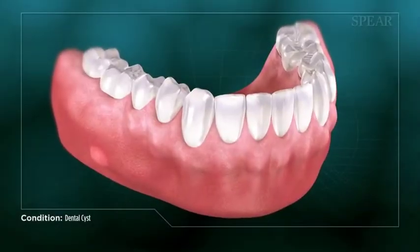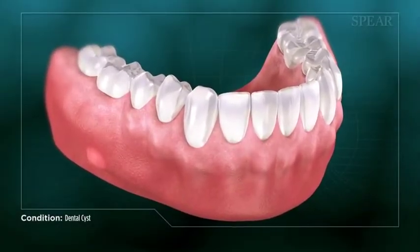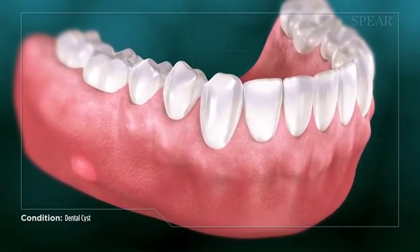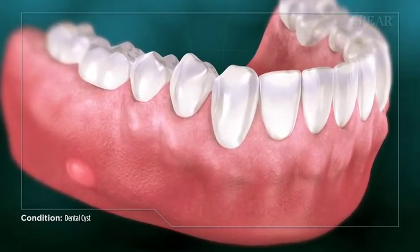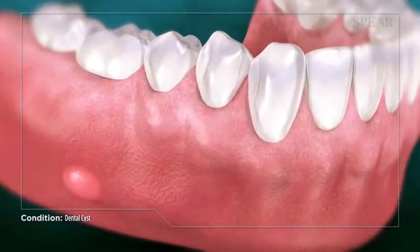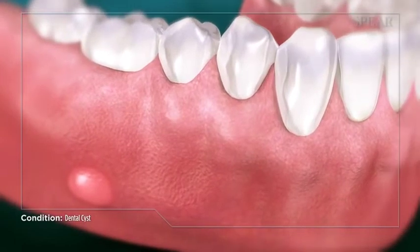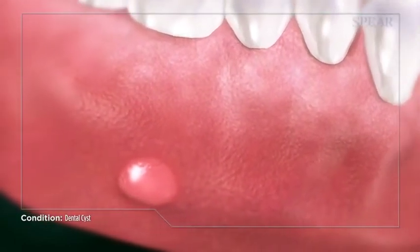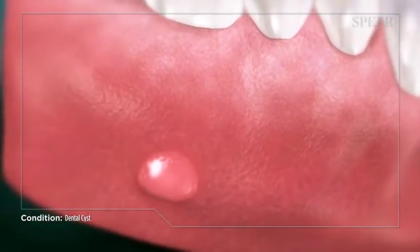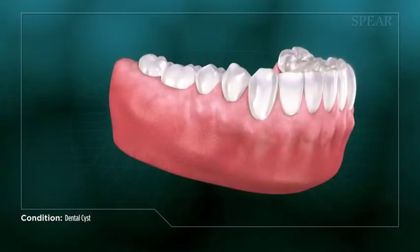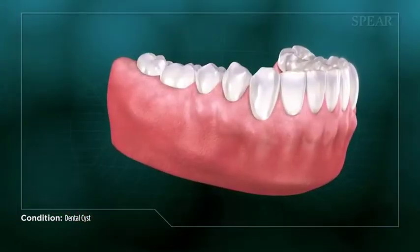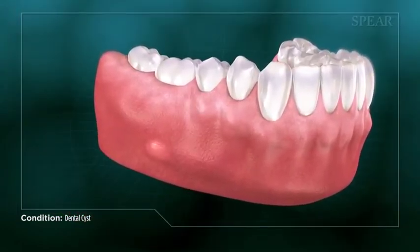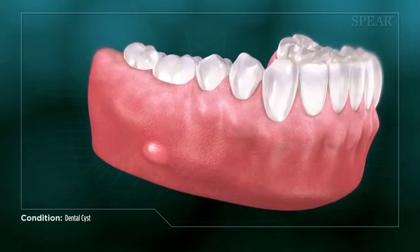A dental cyst is a closed sac that can be made up of air, soft tissue, or fluid that forms next to or around teeth. If left untreated, dental cysts can cause severe problems for your oral health. This type of cyst can form on any tooth and is most often found at the crown of the tooth or at the tip of the root.